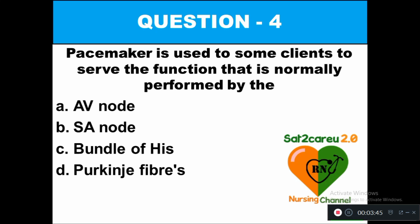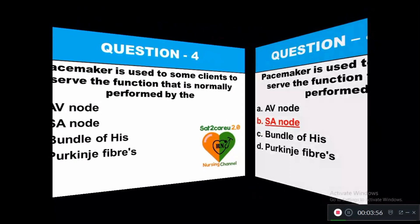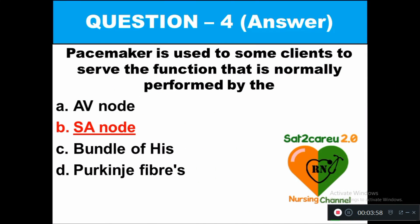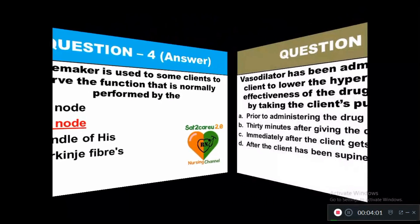Question 4: A pacemaker is used in some clients to serve the function normally performed by: option A AV node, option B SA node, option C bundle of His, option D Purkinje fibers. The right answer is option B, SA node. Question 5: A vasodilator has been administered to a client to lower hypertension. The effectiveness of the drug is assessed by taking the client's pulse and blood pressure at which time?